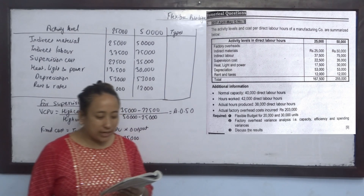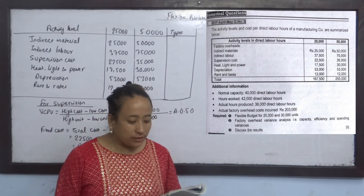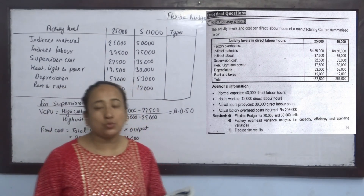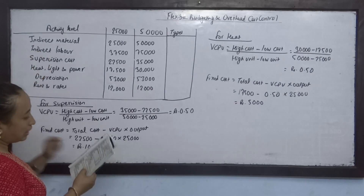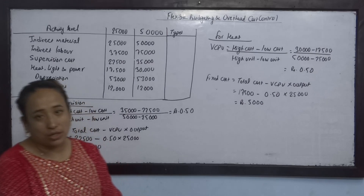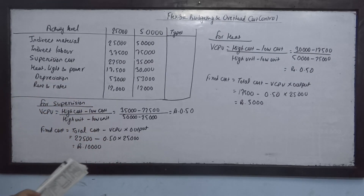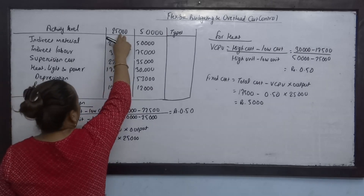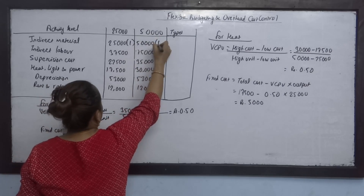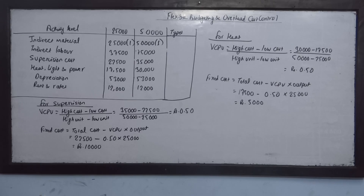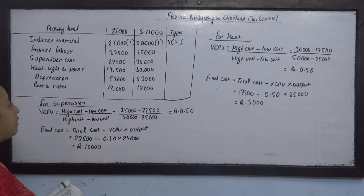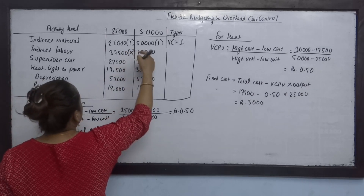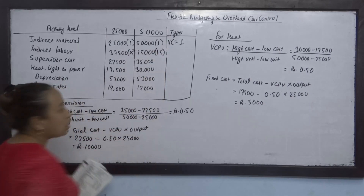The activity level and cost per direct labour hours of a manufacturing company are summarized. Activity level is given in different labour hours — 25,000 and higher levels. From this data we can identify the fixed cost and variable cost. Using indirect material cost data at 25,000 and another level, the variable rate works out to 1.5, and the rate is confirmed as 1.5 for indirect labour as well.